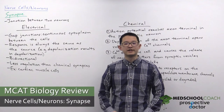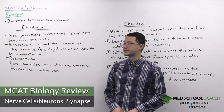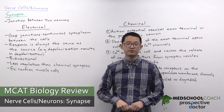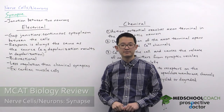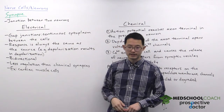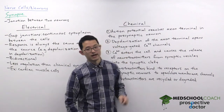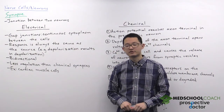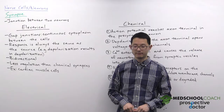In this video we're going to go over synapses. Synapses are the junctions between two neurons. There are two different types of synapses: electrical synapses and chemical synapses. You can see how electrical synapses work in this diagram.